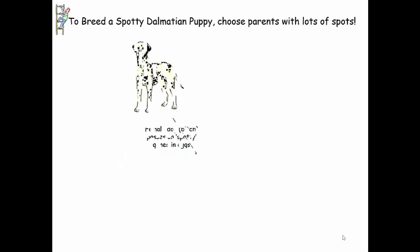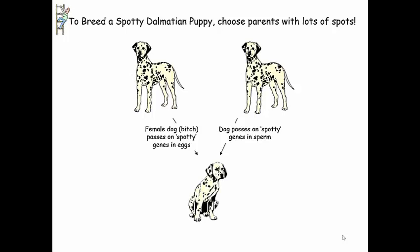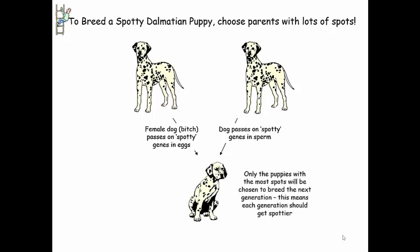So if we want a really spotty Dalmatian puppy, we want to choose parents that both have lots of spots. The female dog will pass on her spotty genes in her eggs, so her spotty genes go through the eggs. The male dog passes on his spotty genes in his sperm. And only the puppies with the most spots are then chosen to breed the next generation, so each generation should start getting spottier.